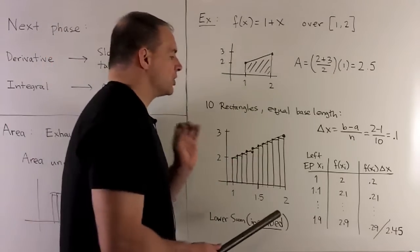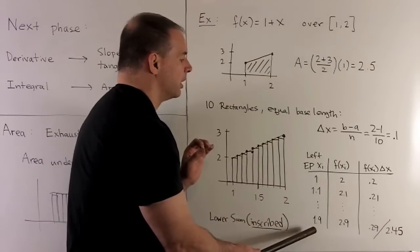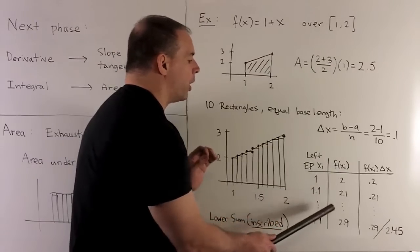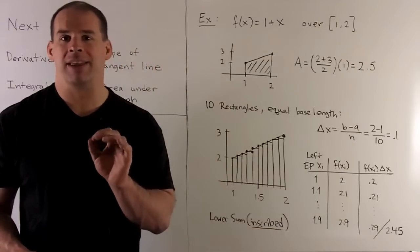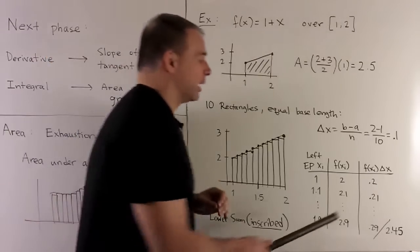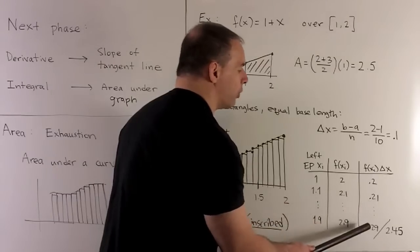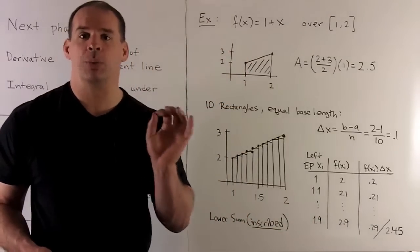Now, to get the heights, we just apply our function to each of our left endpoints. So, it's going to give me 2, 2.1, all the way up through 2.9. Now, if we want the area of the rectangle, we multiply by the length of the base, multiplied by 0.1. So, I'll get 0.2, 0.21, all the way up through 0.29.